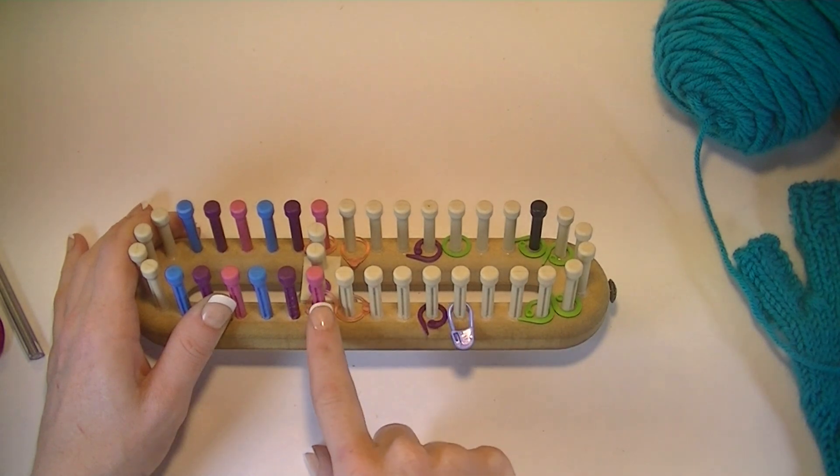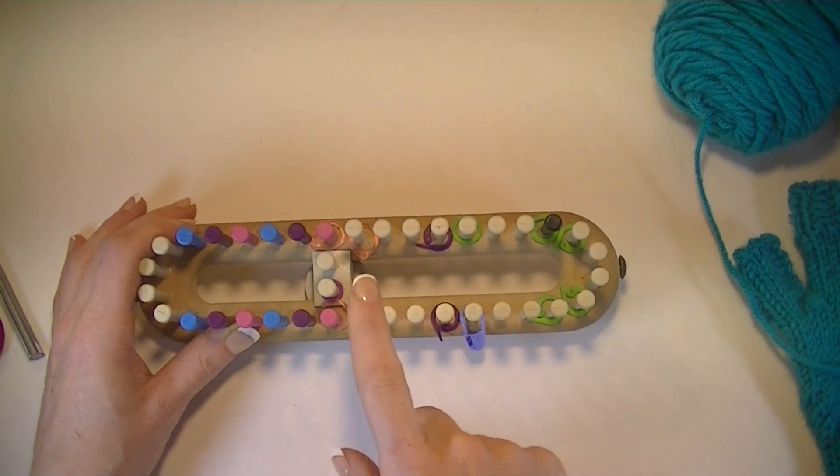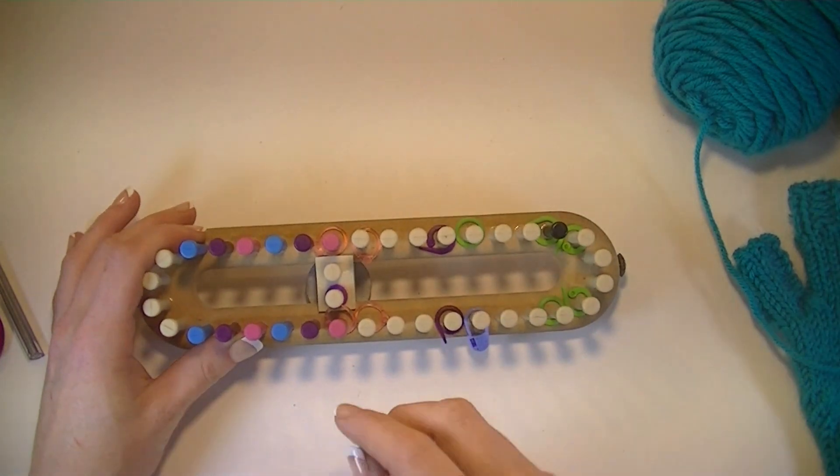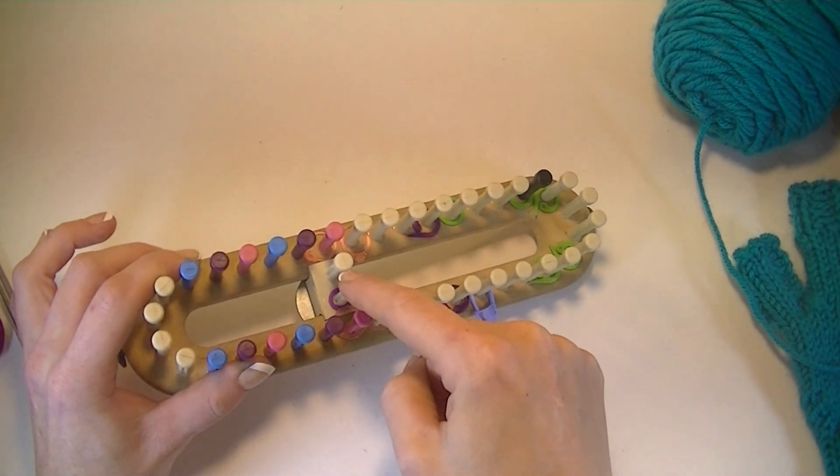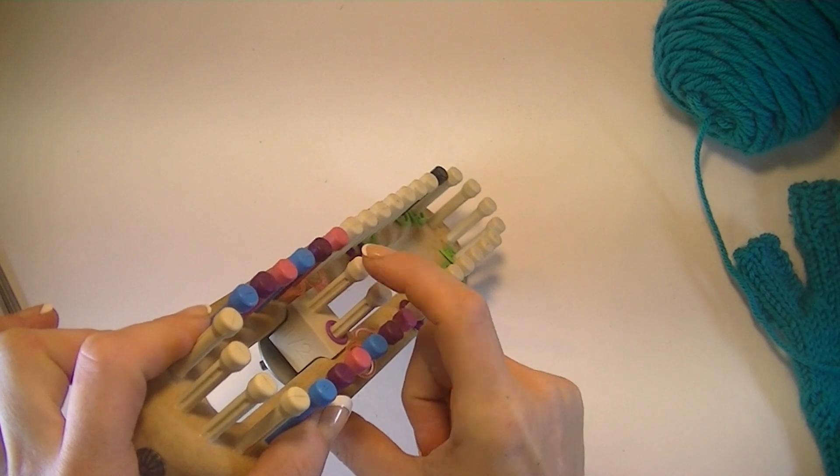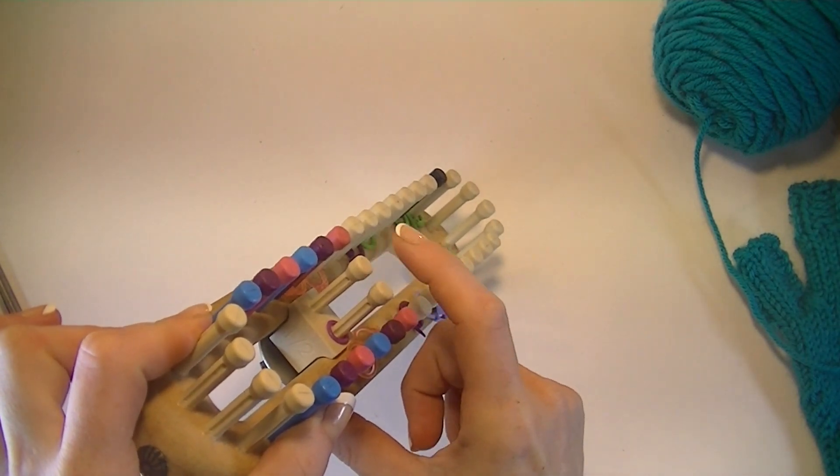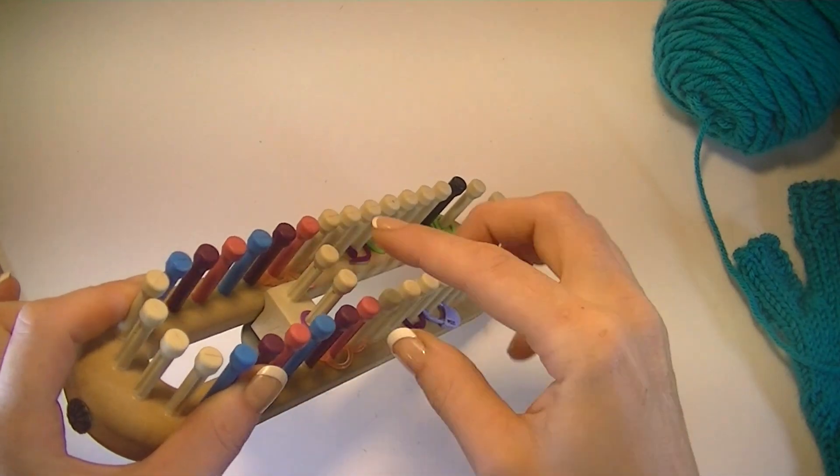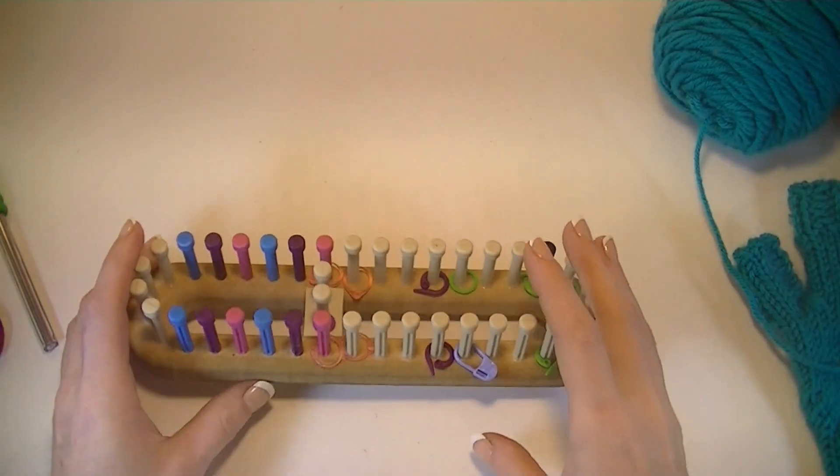So I will purl two, e-wrap two, purl two, e-wrap two. One thing that helps me keep my count even and makes it easier when working around the corners is these ones I always leave as whatever my knit stitch is, whether it is an e-wrap, flat stitch, u-stitch, or true knit stitch. It helps a lot.